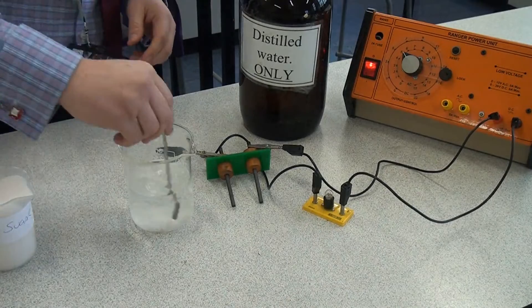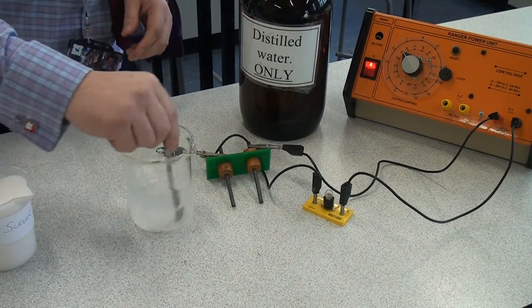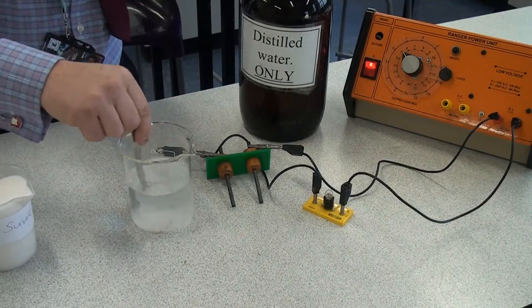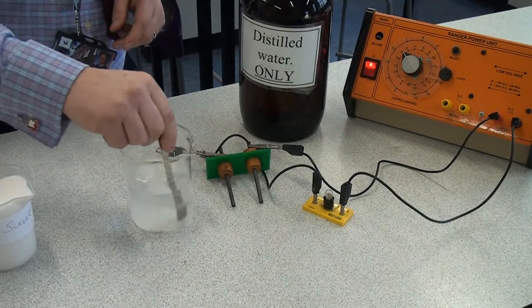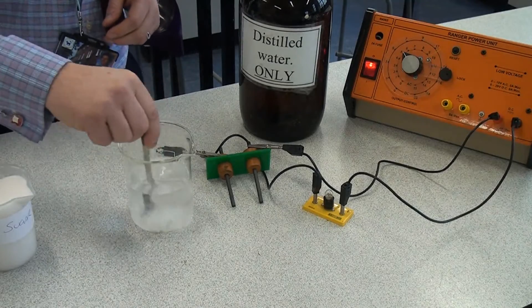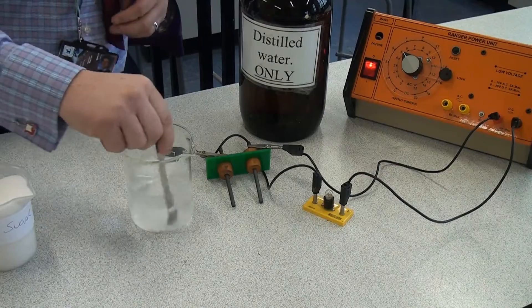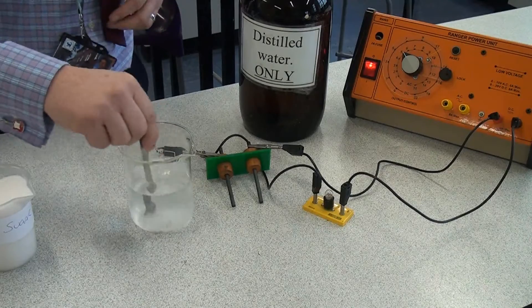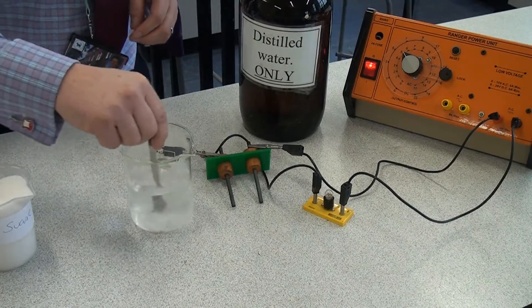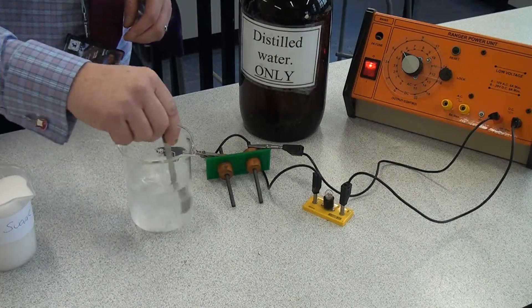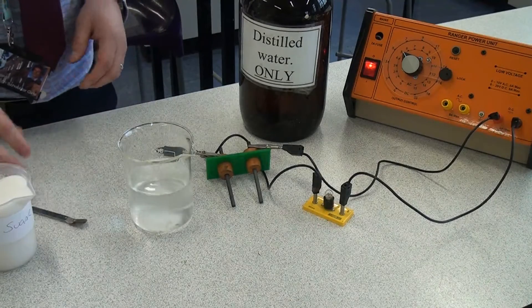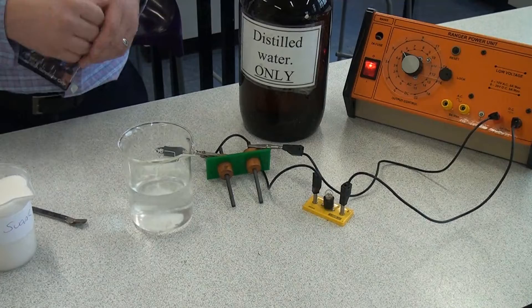So although it might be a saturated solution now some of that sugar will have dissolved. You'll notice I'm using distilled water because that means it won't have any other ions in there. It will just have the sugar. So the distilled water itself is a pure substance. It's only got the compound water and nothing else in there. So a lot of that sugar will now be dissolved in the water.